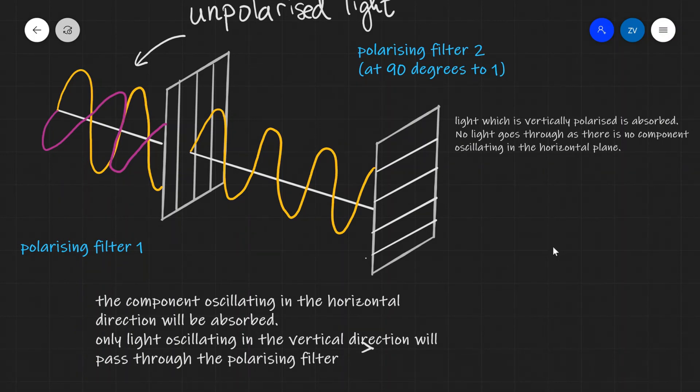as there's no component oscillating in the horizontal plane, and the second filter will only let light through which is oscillating in the horizontal plane.